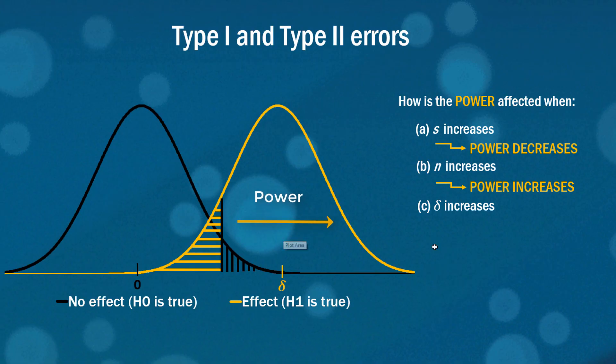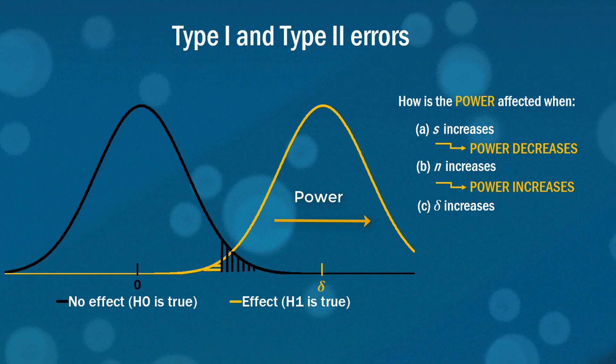And finally what happens if the difference increases? So if these two curves get pushed further apart again the overlap is going to decrease so our power is going to increase. Which I guess on the surface of it might not make so much sense but think of it this way. If the true difference in your lung function between those that stopped smoking and those that continued smoking, if that true difference was really large we can probably be quite sure that our test will reject the null hypothesis. Our test will find that difference if indeed the difference is very large. If the difference is much smaller it's going to be a lot more difficult for our test to reject the null hypothesis.